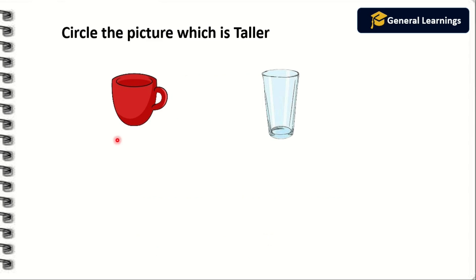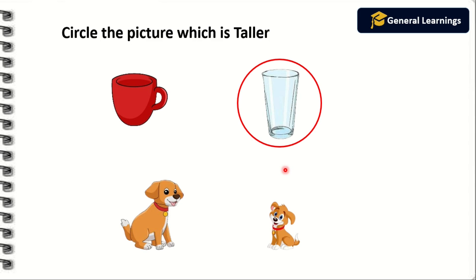Next they tell us to circle the picture which is taller. Here they have given a cup and a glass. While comparing these two pictures, which one is taller? The one with more length will be called taller. The glass has more length, so we are going to circle the glass. Next they have given two dogs — we need to circle the taller one. The left-hand side dog has more length than the other, so we are going to circle that picture.